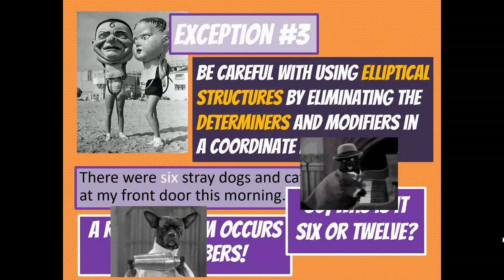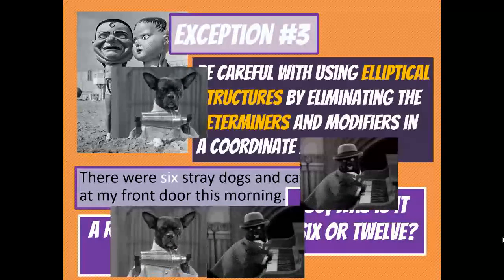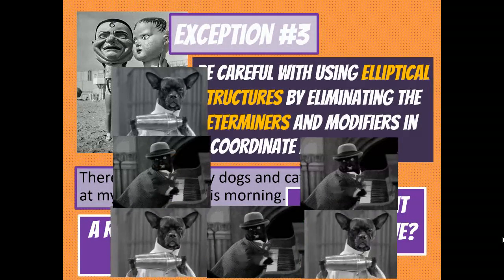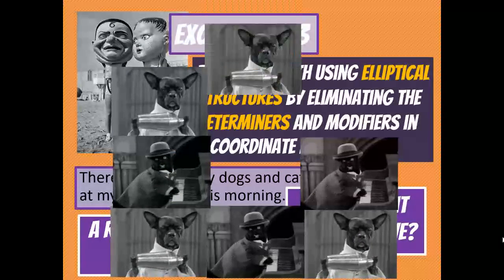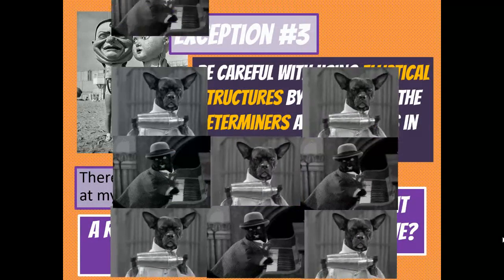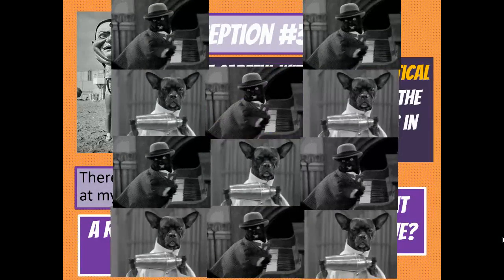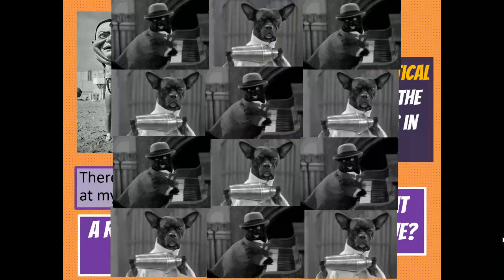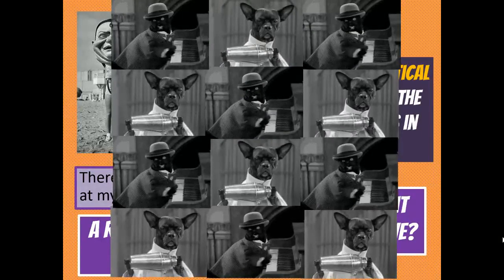You could end up with a dog, then a cat, then another dog, then another cat — and maybe you get six total, or maybe another dog, another dog, more cats, and next thing you know you've got twelve animals: six cats and six dogs. The ambiguity with elliptical numbers is that serious.